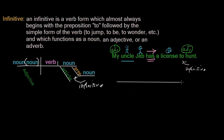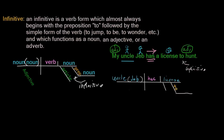Let's go ahead and diagram it. We have our baseline as always, and our bisecting line separating our subject from our verb. Our subject is uncle. Our essential appositive is Jeb. Our verb is has — it's a transitive verb, transiting from the subject to the direct object — and our direct object is license. What does Uncle Jeb have? He has a license. Now let's put in our infinitive, to hunt. To is the preposition; hunt is the object of that preposition. We're modifying uncle with an adjective: my, capitalized because it's the first word in the sentence. And we have a license.